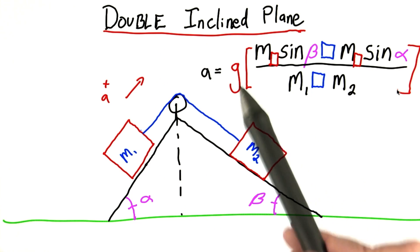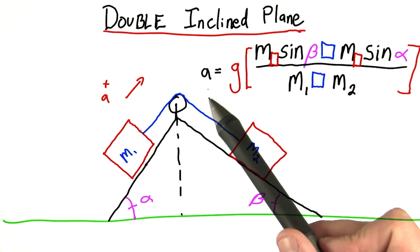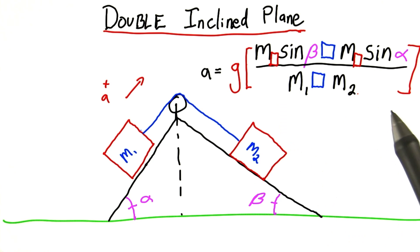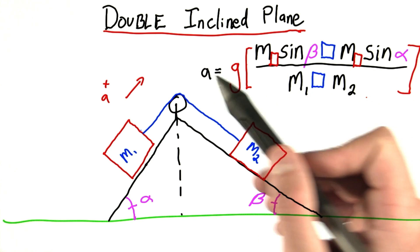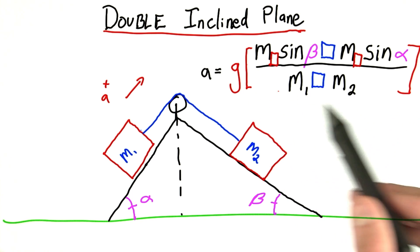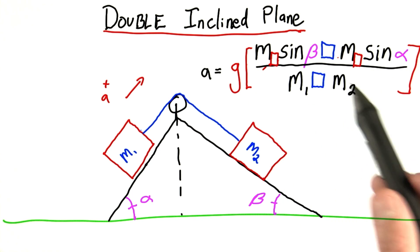And for this question, I'm going to tell you that the acceleration looks something like this. Now, what's going on here? The acceleration is g, the acceleration due to gravity, times this modifier of some sort.